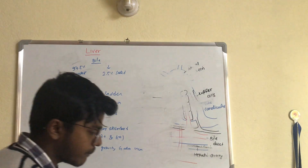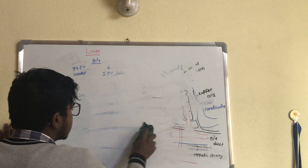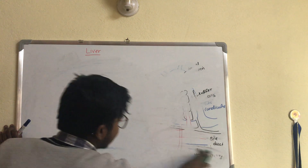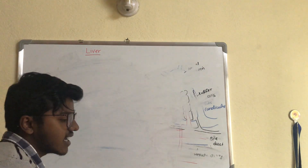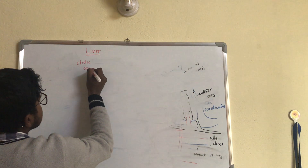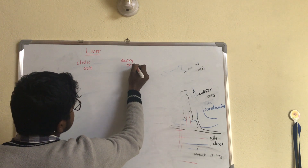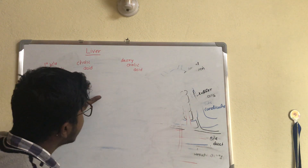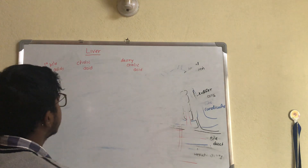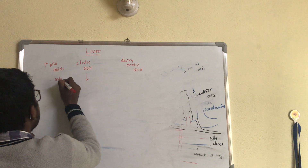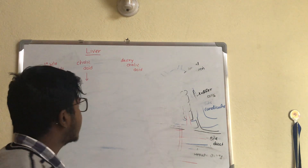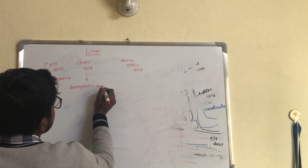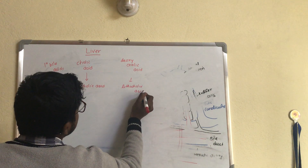Coming on to the fate of bile salts — there are primary bile acids secreted by the liver: cholic acid and deoxycholic acid. These are primary bile acids. When they go into the intestine, they are acted upon by bacteria to form secondary bile acids: deoxycholic acid and lithocholic acid. This is important for entrance examinations — which is primary and which is secondary? Secondary bile acids are formed in the intestine by bacterial action.